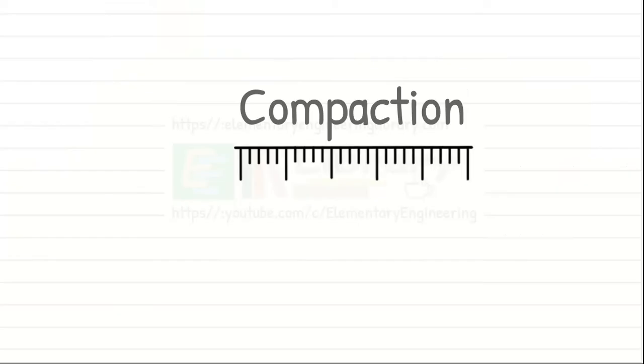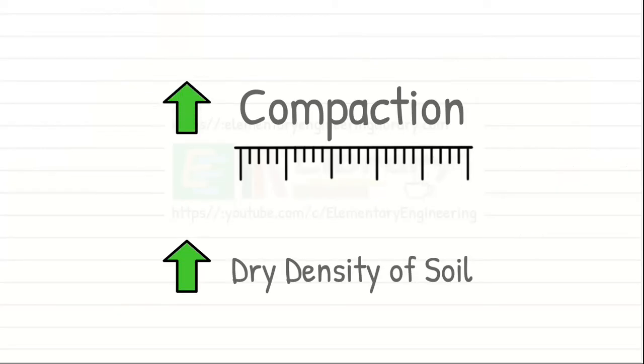Compaction is measured by the dry density of soil. Higher the dry density, higher is the compaction.